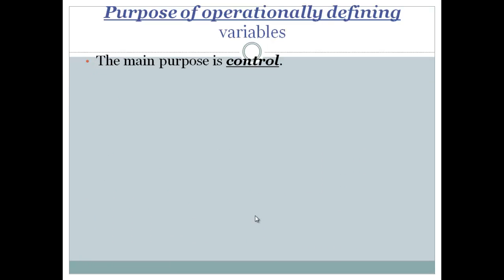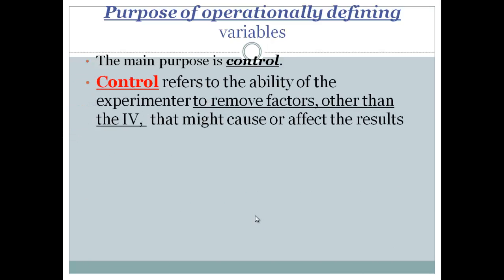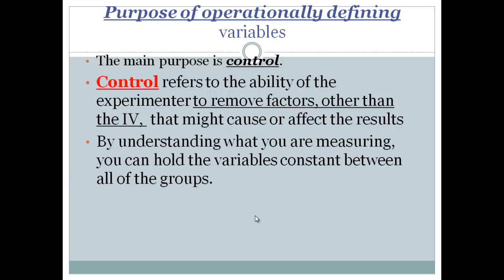So remember, our purpose is to control variables in a study. And control basically means that we are understanding what we're measuring. We can control for it by holding other variables constant between groups that we're measuring. And it allows us to be very specific.